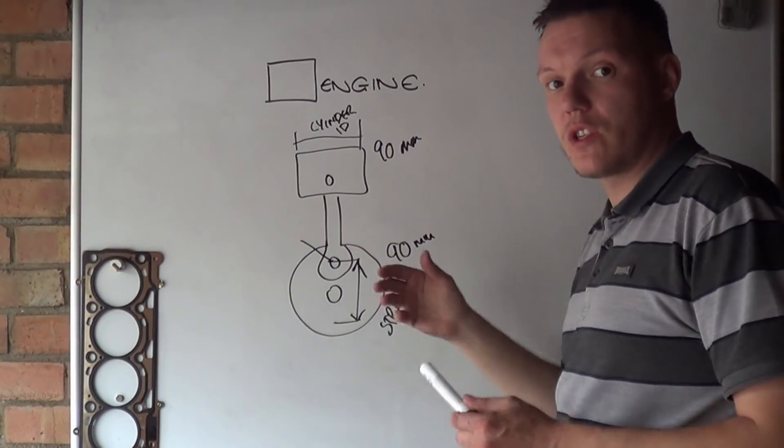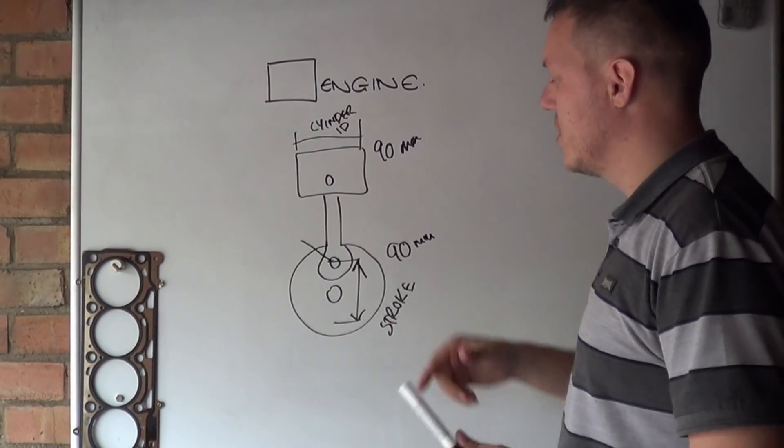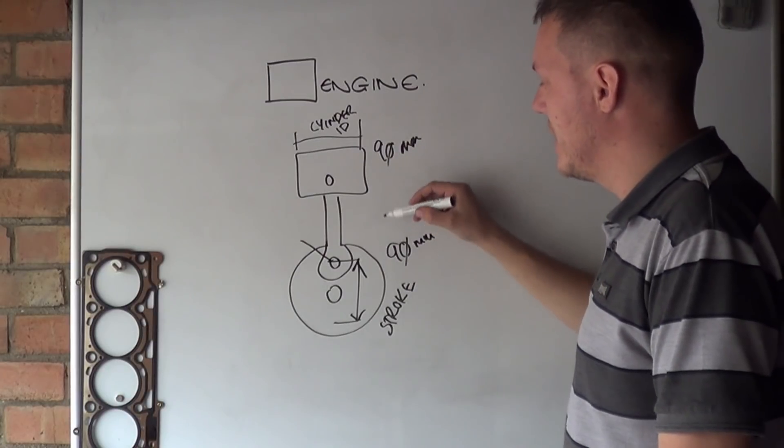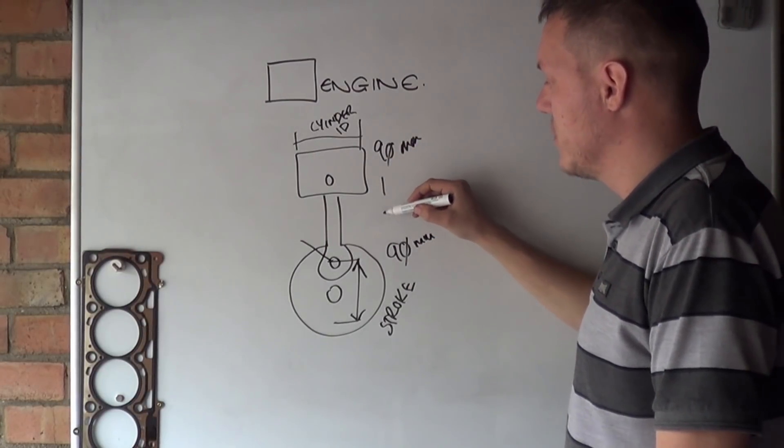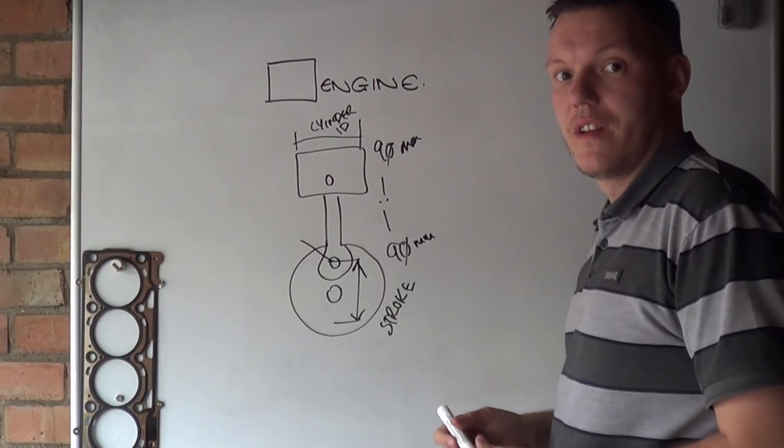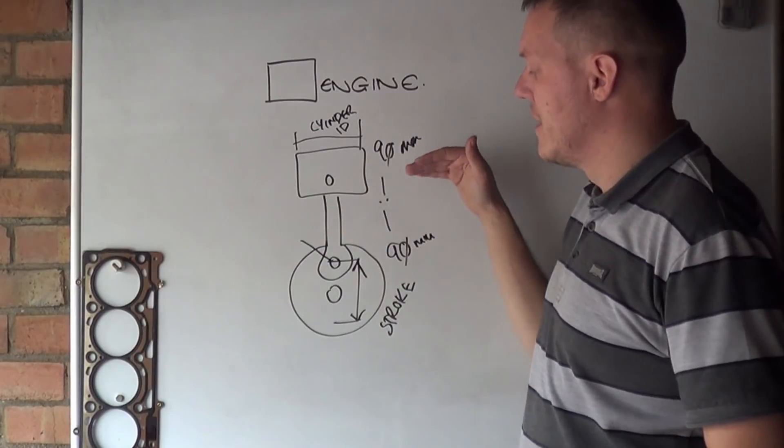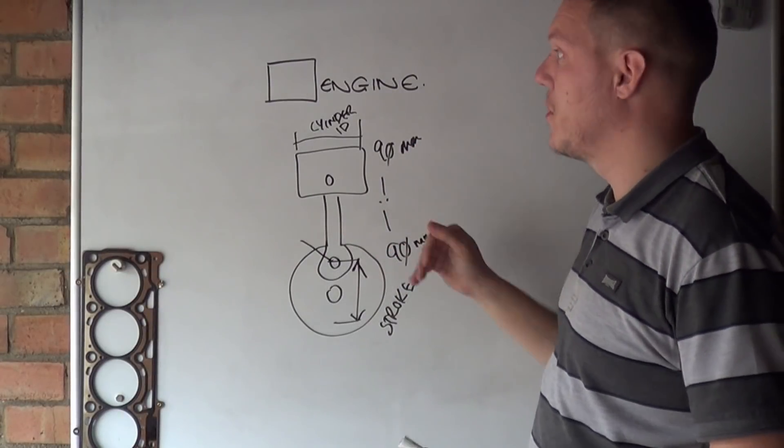This is what we call a square engine. It's the ratio between the two, so we can knock them two off, so that's 9 and 9, and 9 goes into 9 once, so it's a 1 to 1 engine. That's basically it, there's nothing sexy about it, it's just the relationship between the stroke and the piston bore.